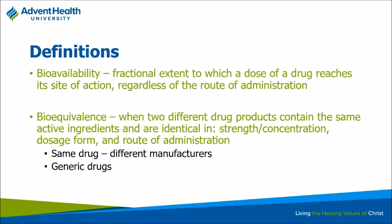One term you may see occasionally is bioequivalence. This comes up when generic drugs come out. Remember, the patent on a new drug is 20 years. Once that's up, generic manufacturers can come out. They have to show bioequivalence — that they have the same release characteristics and the same drug concentration, within a certain percentage of the original compound. That's when the FDA says yes, you're approved as a generic drug.